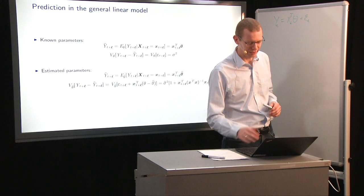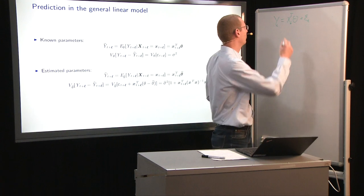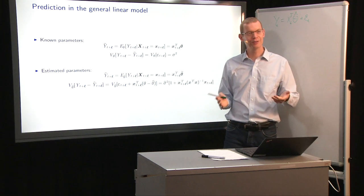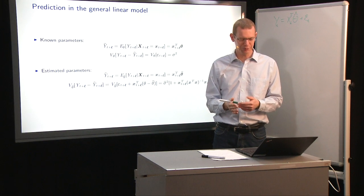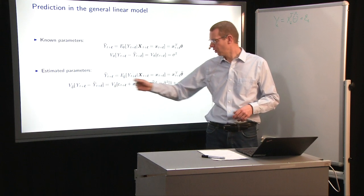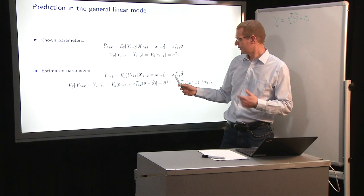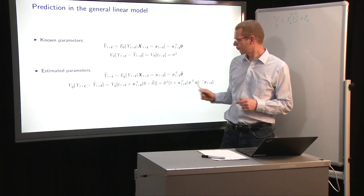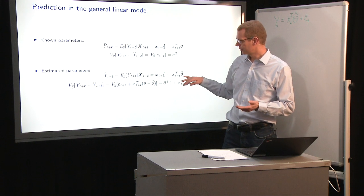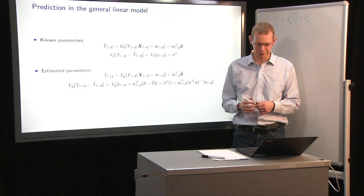Now, if we look at the case where we estimated parameters, so what we have here is that we have a hat on that theta. That means we also have the variance on the estimated theta as before. Again, the expectation of Y t plus L hat is the predictor at that time multiplied on the transpose on theta hat. So that's very transparent, but the uncertainty now includes two parts.